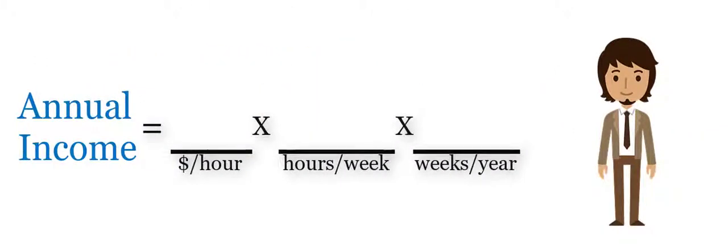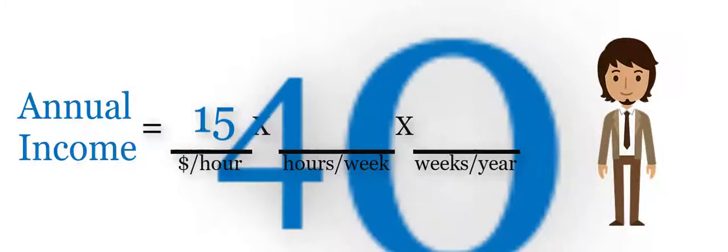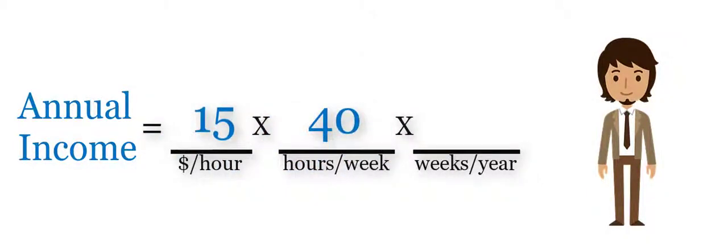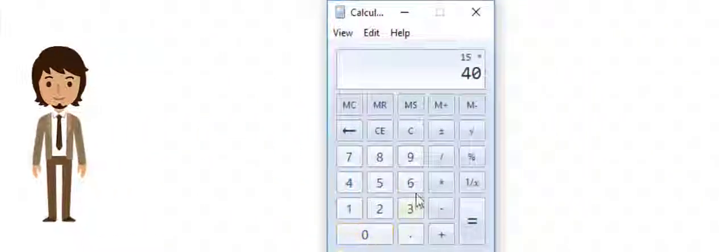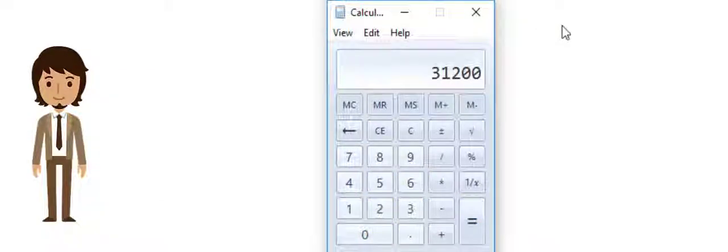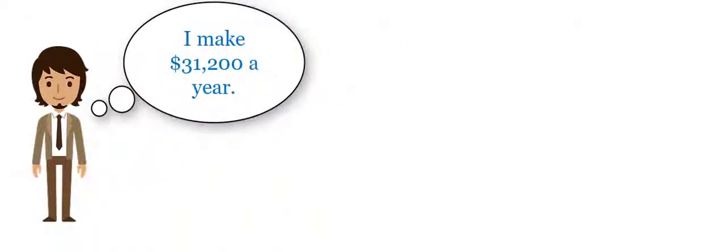Step one, calculate your annual income. So in this example, multiply 15 by 40. Now let's say you get paid every week. So that's 52. So 15 times 40 times 52. Multiply these together. Your annual income is $31,200.